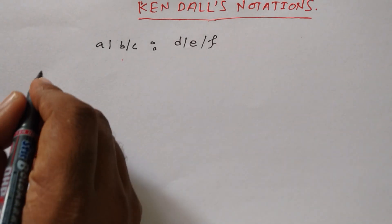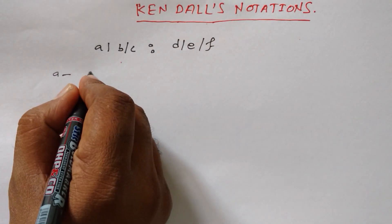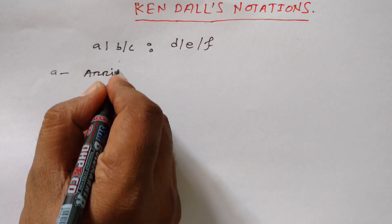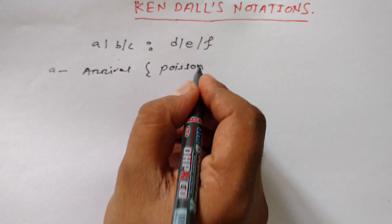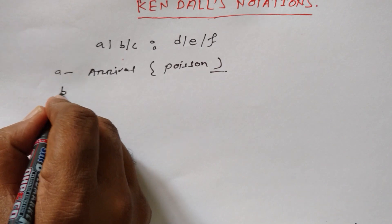A is arrival, and in arrival the Poisson distribution is followed.